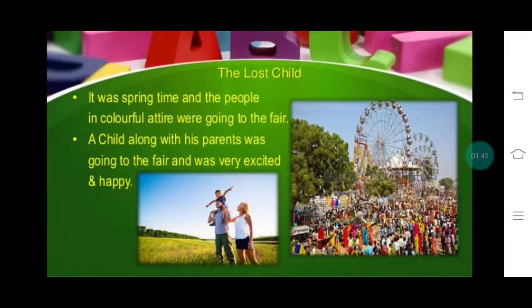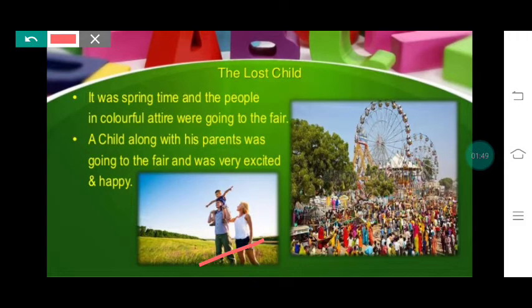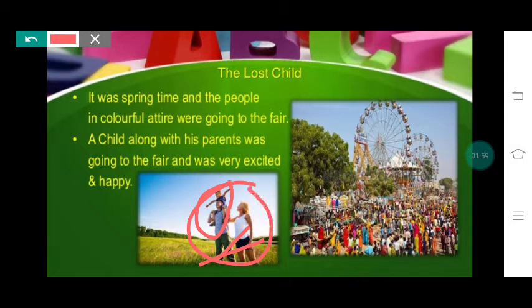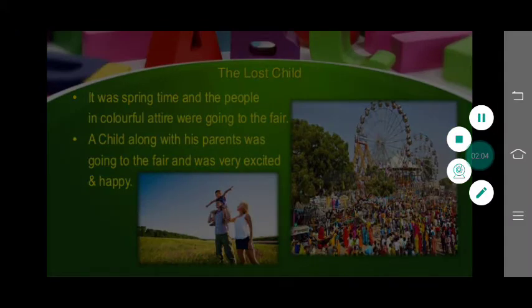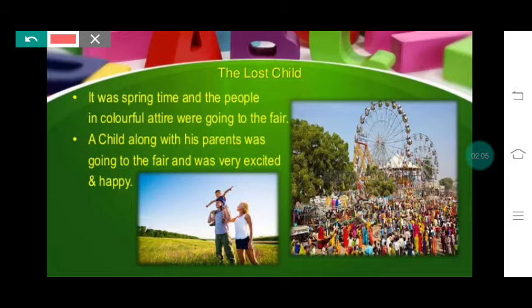Here you can see two pictures. In the first picture, there is a father, mother, and a child. Everything in this chapter is about this family, and especially this child, because the name of the chapter is The Lost Child. So let's start the detailed summary.